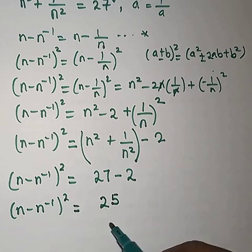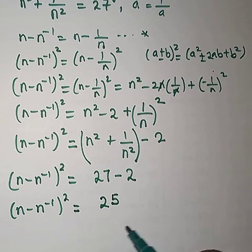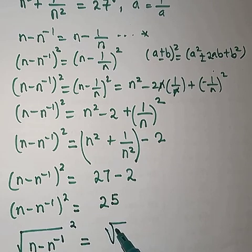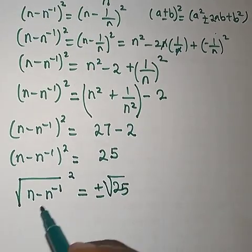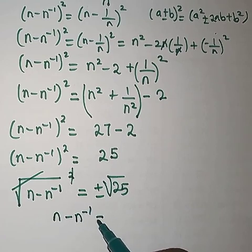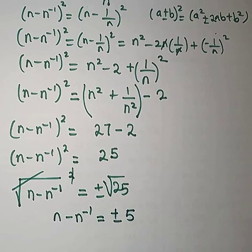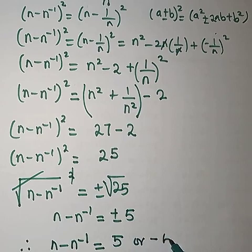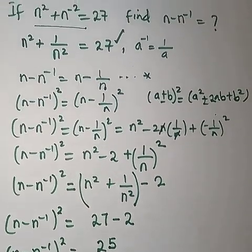Now let's take the square root of both sides. That is, n minus n to the power minus 1, we had it squared before, so taking the square root gives us plus or minus the square root of 25. So n minus n to the power minus 1 equals plus or minus 5. So which is what we are looking for — n minus n to the power minus 1 equals 5 or minus 5. And that is what we are looking for.